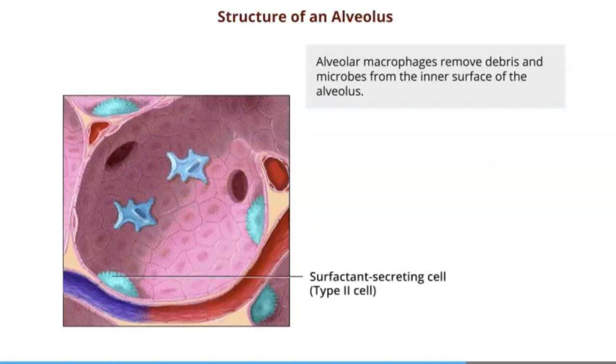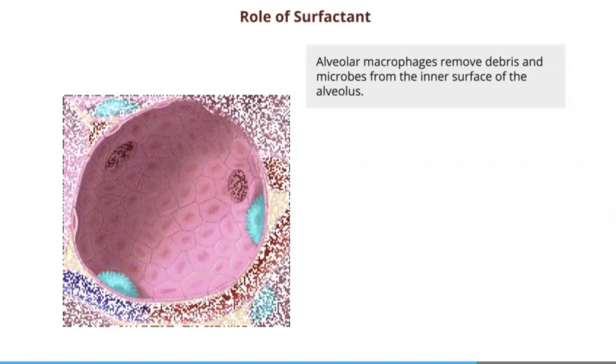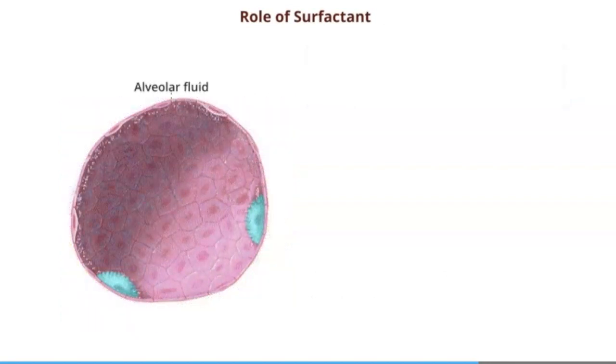Type 2 cells produce a secretion called surfactant. Surfactant is like an oily coating that coats the inside of the alveolus and it alleviates surface tension in the alveolus. So let's take a closer look at surface tension.